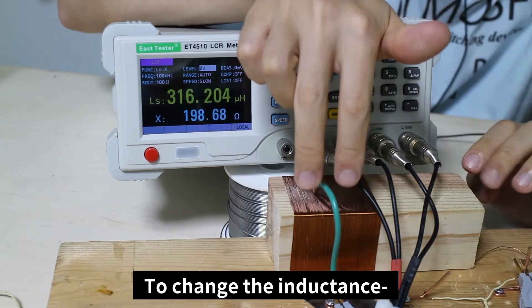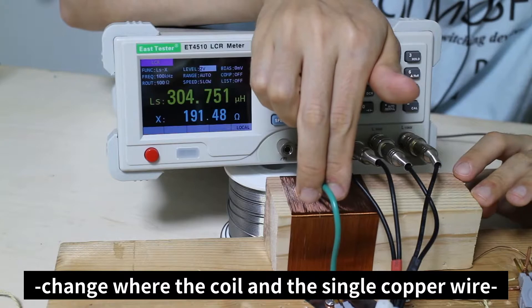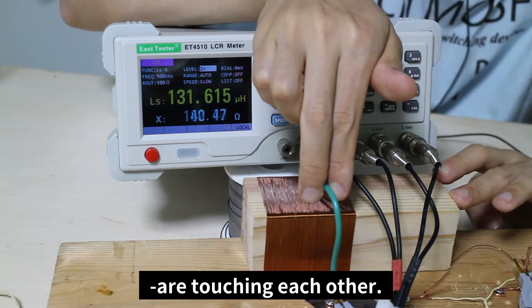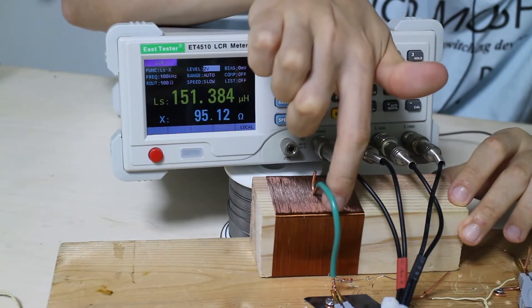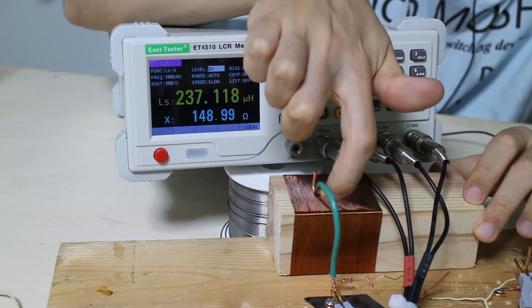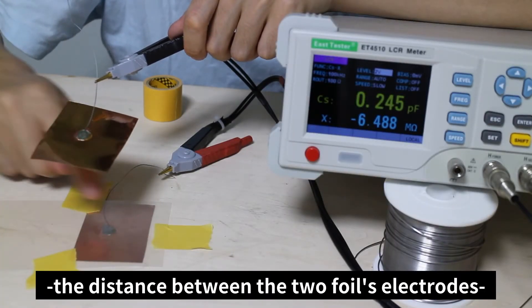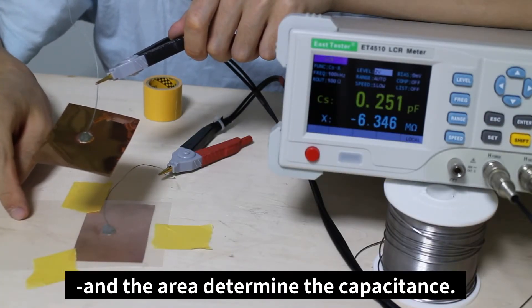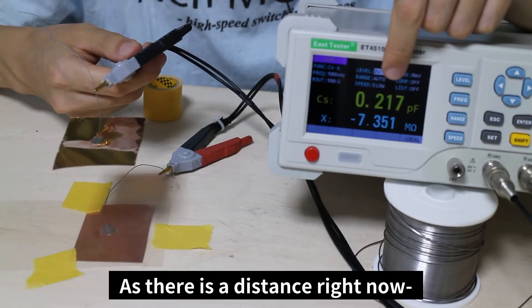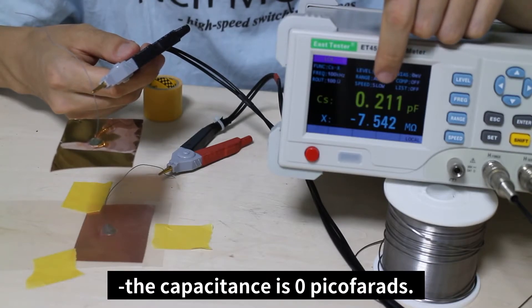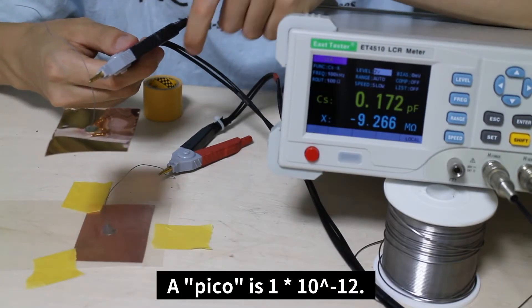To change the inductance, change where the coil and the single copper wire are touching each other. As for the capacitor, the distance between the two foil's electrodes and the area determine the capacitance. As there is a distance right now, the capacitance is zero picofarads. A pico is 1 times 10 to the minus 12.